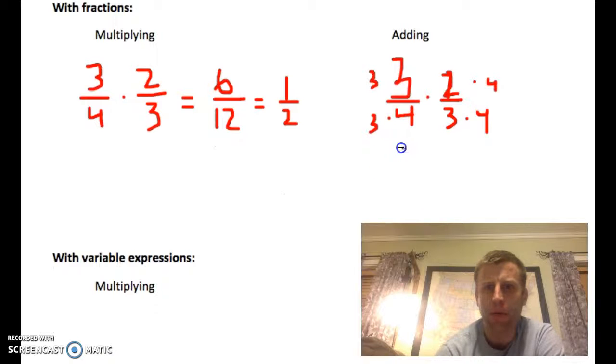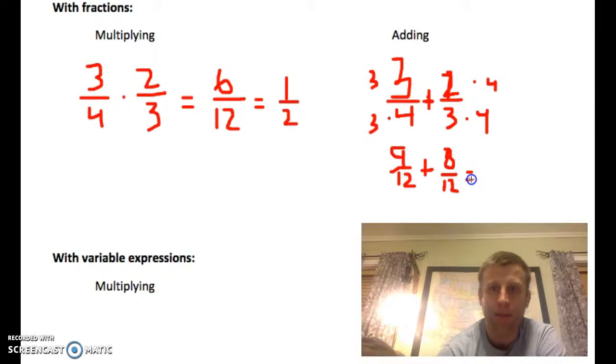So, what do we got? Nine over twelve. Sorry about the sloppiness. Oh shoot, this is supposed to be plus. Nine over twelve plus, because we're adding, eight over twelve. So, we're talking seventeen over twelve. The point is, you do have to have, for adding, you need them to be like. Which is review.